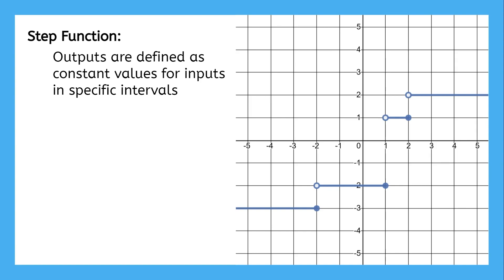If that definition is a little confusing, think of it this way. On this graph, the output is negative 3 if the input is anything less than or equal to negative 2. The output is negative 2 if the input is greater than negative 2 and less than or equal to 1. It's 1 if the input is between 1 and 2, including 2. And the output is 2 if the input is anything more than 2.